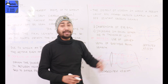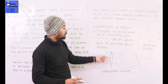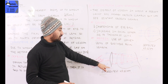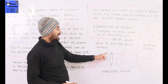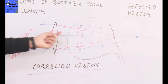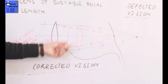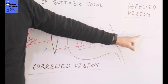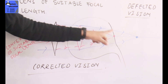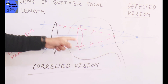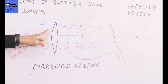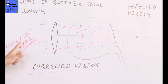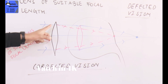In the diagram, the corrected eye shows that using a convex lens of suitable focal length brings the image correctly onto the retina, remedying the defect of vision.